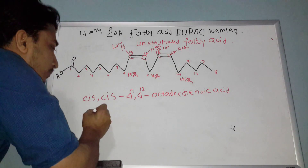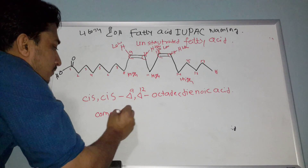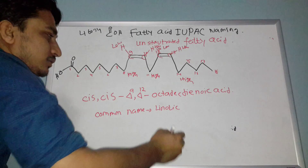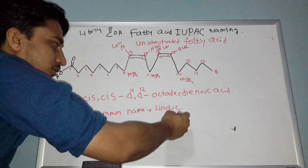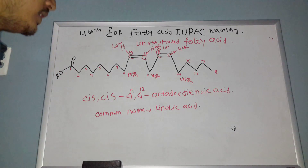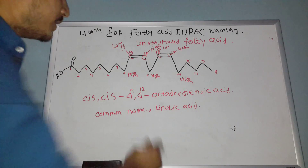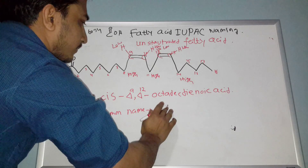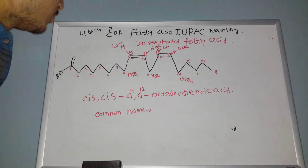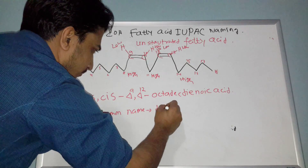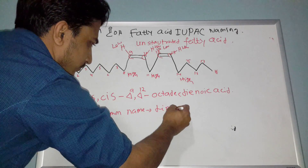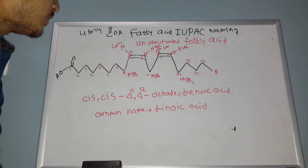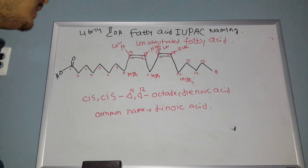The common name of this fatty acid — cis,cis-delta-9,delta-12-octadecadienoic acid — is linoleic acid. I think the spelling is L-I-N-O-I-C, linoleic acid. You can check the spelling in your textbook or on the internet.